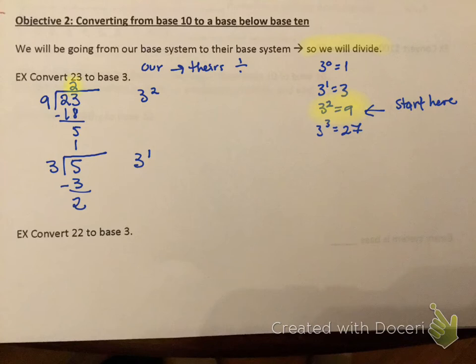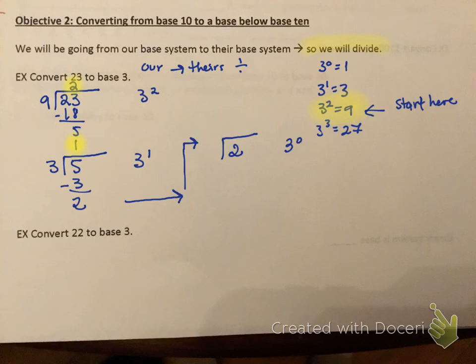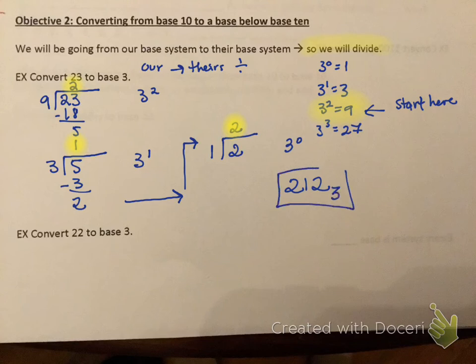Let me highlight what I've got so far: a 2 and a 1. Now I take the remainder of 2 and divide by 3 to the 0, which is 1. So 2 divided by 1 is 2. I have the values 2, 1, 2 — and I write that down as 212 base 3, with the subscript 3 to show I'm in base 3 and not the Hindu-Arabic base.